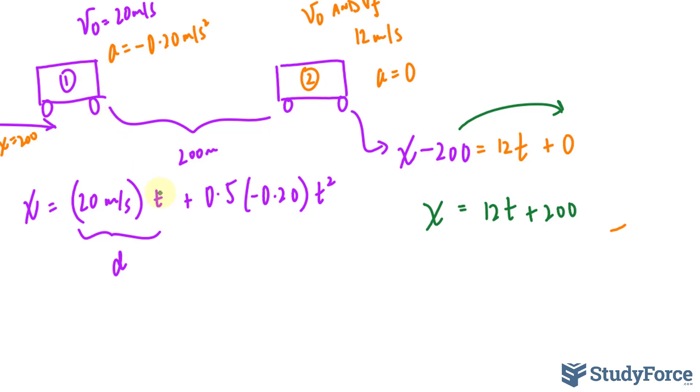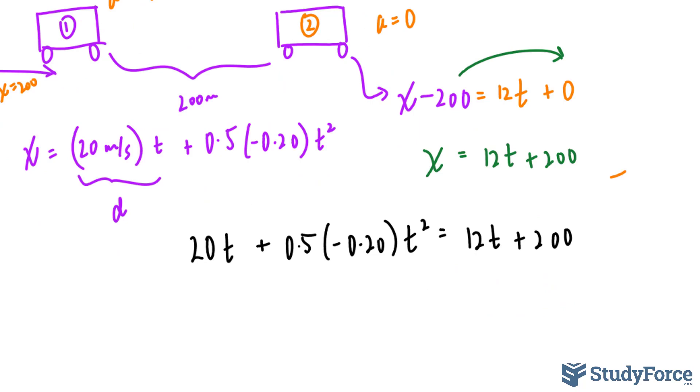If you want to find out whether the two trains will collide, you have to set the two x values equal to each other. If you set them equal to each other and you solve for t, if you end up with a t value, that suggests that at some point in time, their distances will be equal. So from here, we can set this expression equal to that expression and solve for t. So I have 20t plus 0.5 times negative 0.2 t squared is equal to 12t plus 200. Let's see if we can actually end up with a t value. That would suggest that they collide.